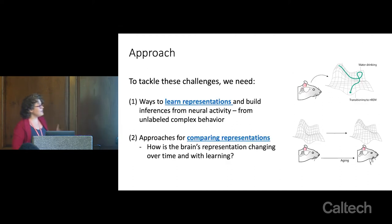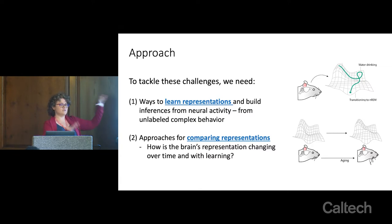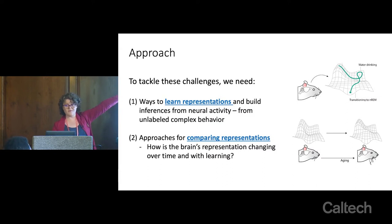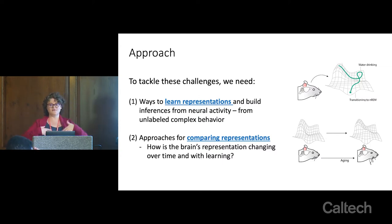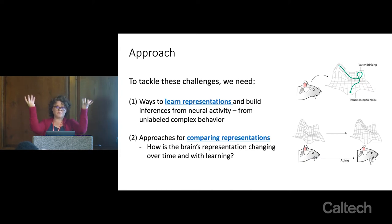In my lab, we do a lot of work tackling this type of general challenge through a number of different AI and deep learning paradigms. In particular, we focus a lot on the question of representation learning: from an unsupervised perspective, how do you take collections of neural activity and boil them down into something that is reflective of the behavior? And then we're also really interested in the question of comparison — if I look at the activity of two brains, or maybe the same brain over different time points or after learning, how do we make sense of what's changed, what's the same, and compare those representations?